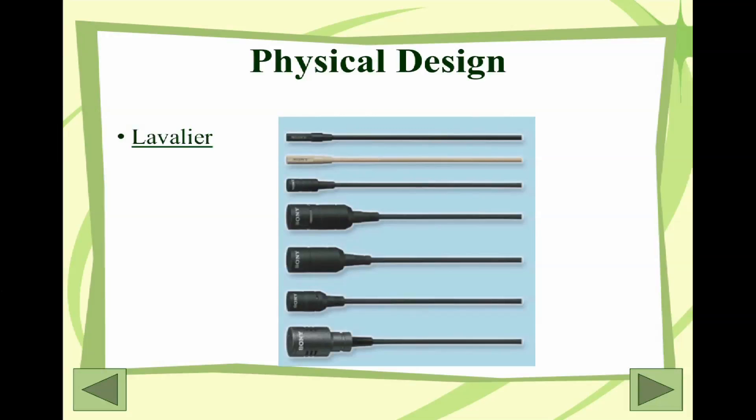The lavalier mics — those lapel mics or tie mics — will typically have a little clip with them so we can clip them onto something: normally clothing, a necklace, a tie, part of your coat. You can also tape them directly onto your subject using gaffer's tape or another type of tape that doesn't leave a horrible residue but sticks fairly well, so the subject can move around with it.